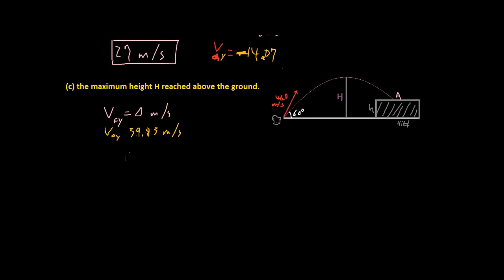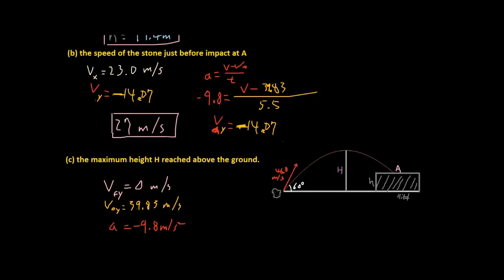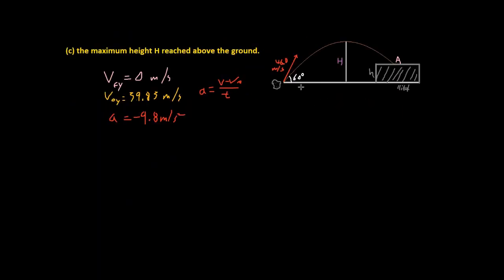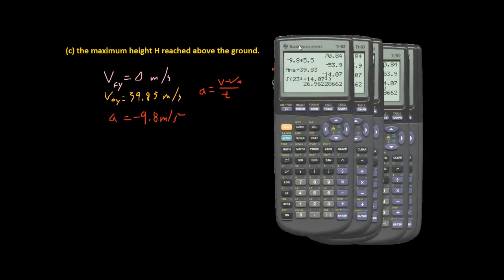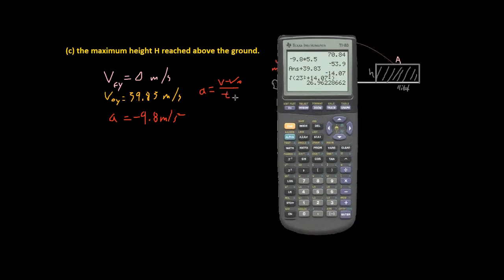So v_fy, and our acceleration is negative 9.8 meters per second squared. We can just calculate using this equation right over here. So we're just going to plug and chug. If you plug and chug, you switch t and a, and v_final is just zero, so it's going to be negative 39.83 divided by negative 9.8.